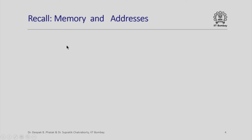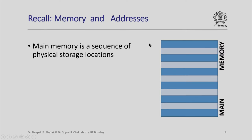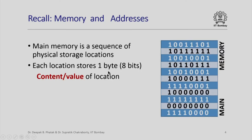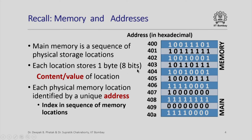Let us quickly recall the organization of memory and addresses of memory locations. Main memory can be thought of as a sequence of physical storage locations as is depicted here. Each of these locations stores one byte or eight bits. Each horizontal rectangle can be thought of as one location of memory storing eight bits, and these eight bits will also be called the content or value of that location. Each physical memory location is also identified by a unique address, which can be thought of as the index of that memory location in the sequence of memory locations.